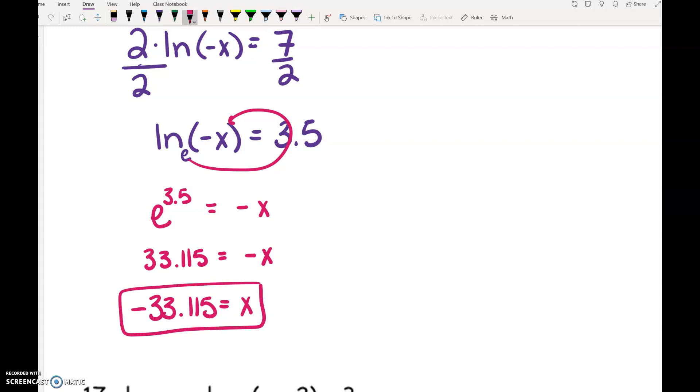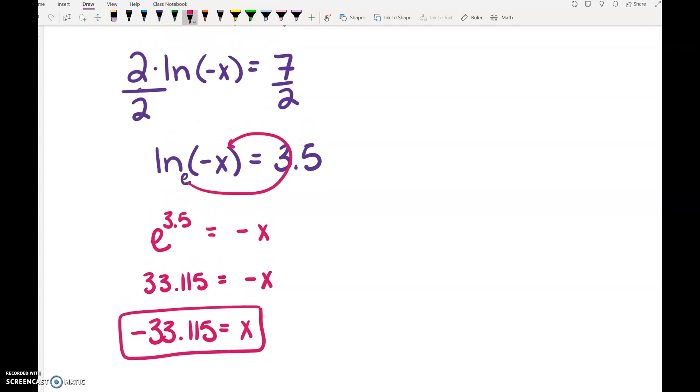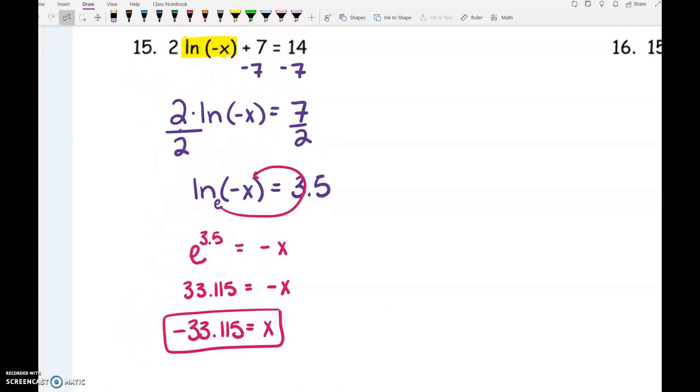Here's the kicker. We have to check to make sure that this doesn't create a negative inside the log. It says LN of negative x. So if you put negative 33.115 in there, you'd have negative negative 33.115, which would end up being positive. So it is fine. That negative that's already in there basically is telling you that having a negative solution is okay because negative negative makes positive.